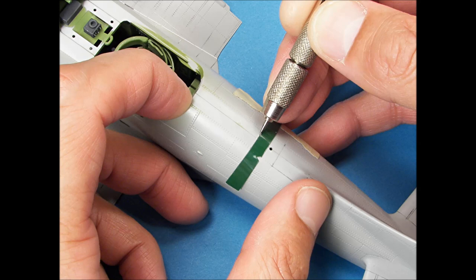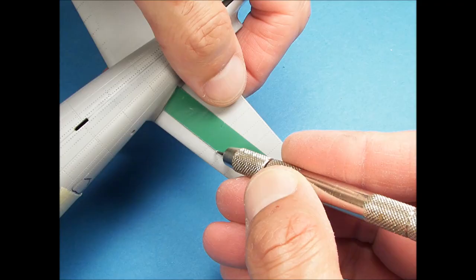Around curved surfaces, reducing the width of the labeling tape helps it contour around these types of surfaces when scribing. And labeling tape works great for scribing straight lines, because it has such a nice edge.